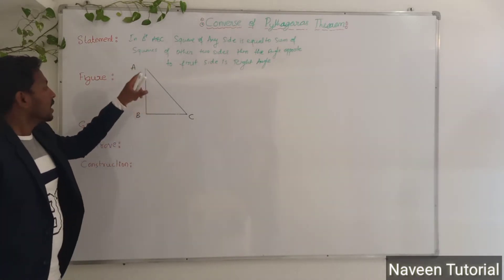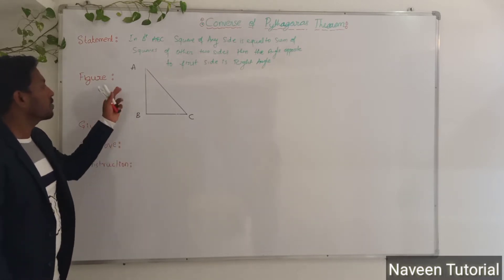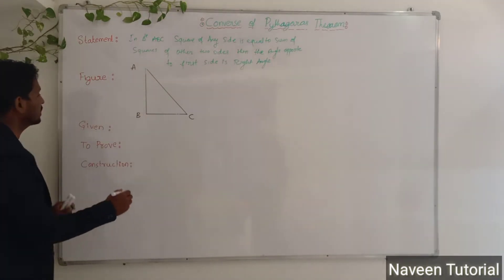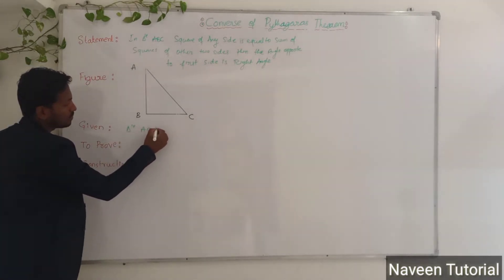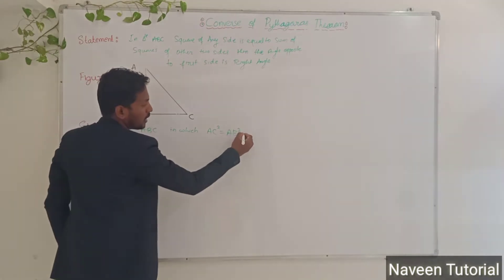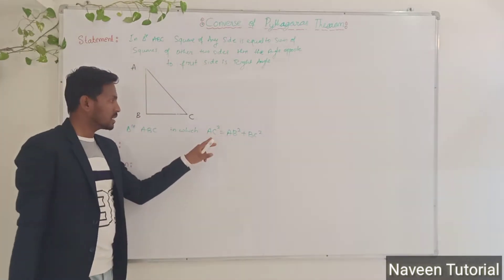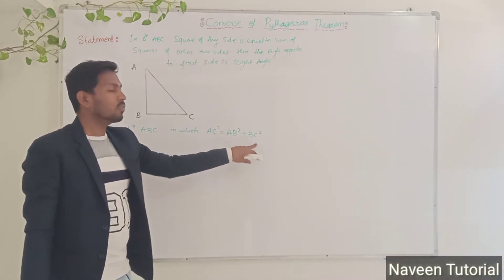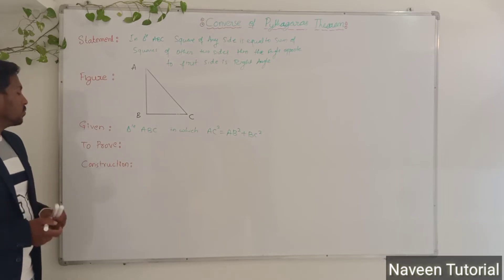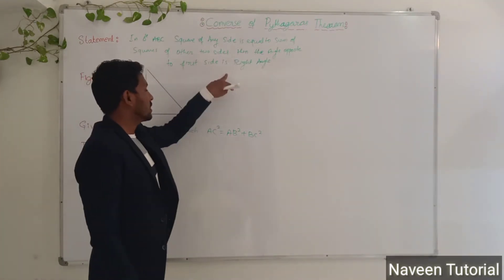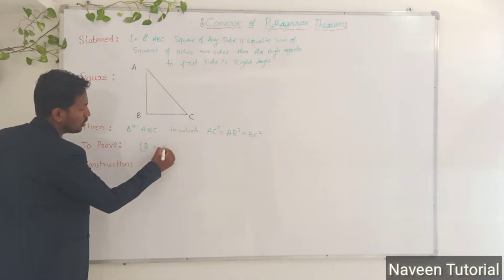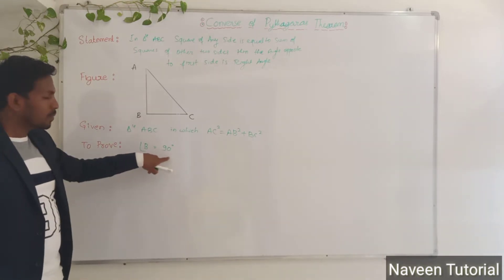Square of any side — you can take either AC, BC, or AB — is equal to the sum of squares of the other two sides. Then the angle opposite to the first side is 90 degrees. So here, the given is: triangle ABC in which AC square is equal to AB square plus BC square. We have to prove that angle B is equal to 90 degrees.